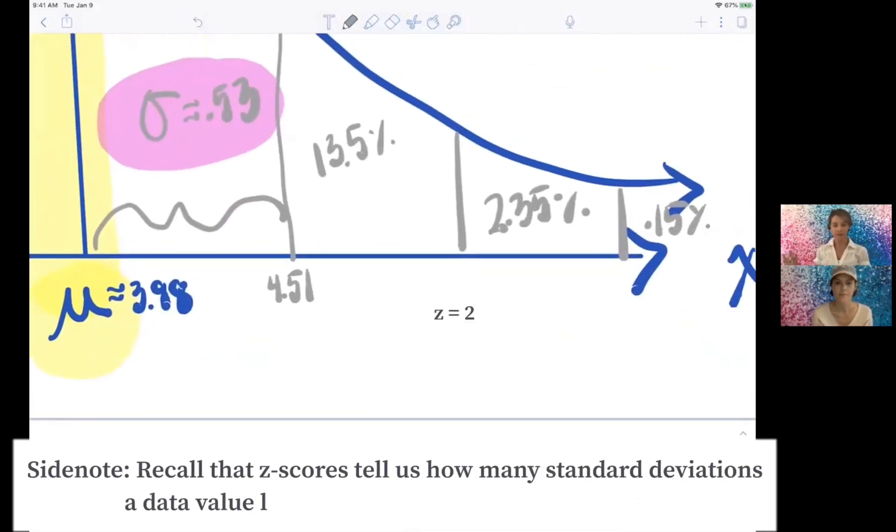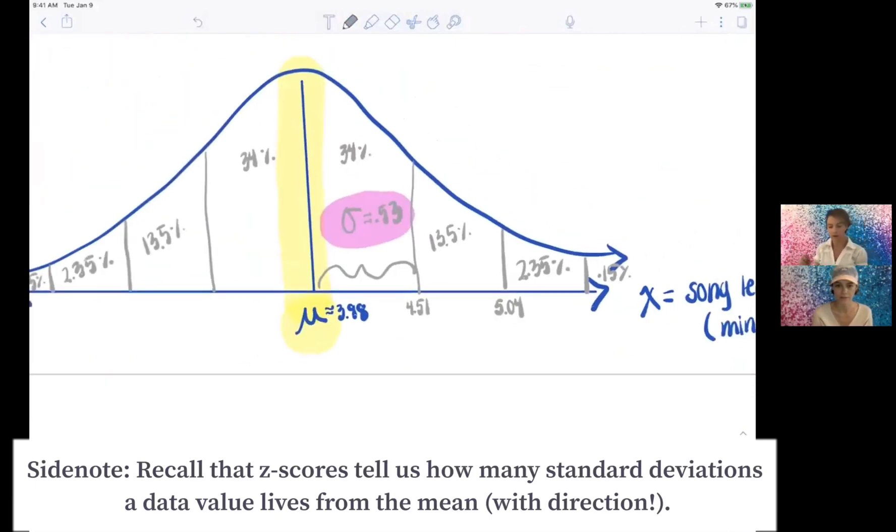So that would be 5.04, just adding another 0.53, right, each time. So we did that again, and then we'll do it again. Yep, so then that's 5.57.